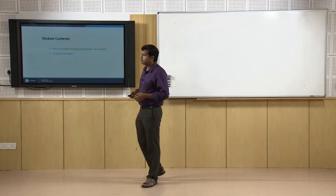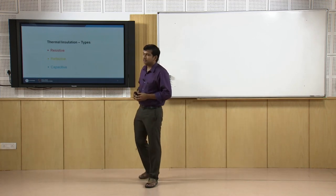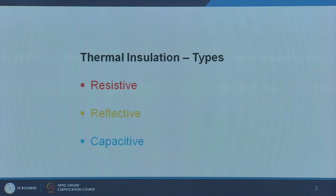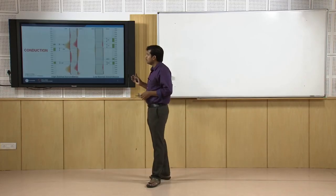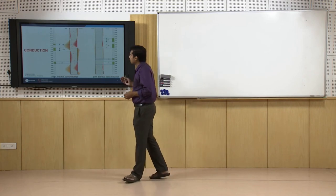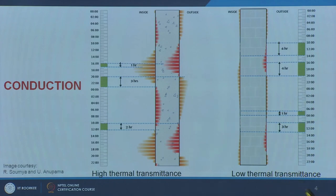I will also show some applied examples. For a quick recap, we looked at three types of insulation. First was resistive insulation — the common index used is the U-value or thermal transmittance, or the R-value. The second type is reflective insulation, and the third is capacitive insulation, which relates to the thermal capacity of a particular building envelope. We were talking about the intensities and the pattern of heat gains and losses through a particular wall.